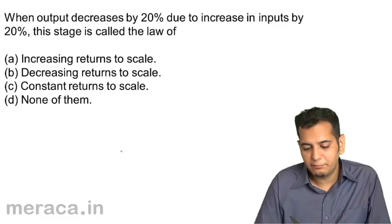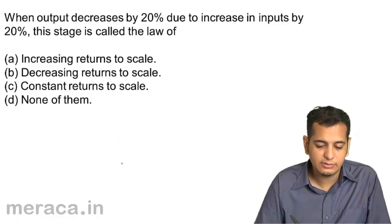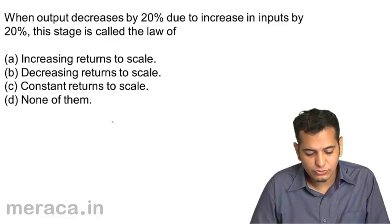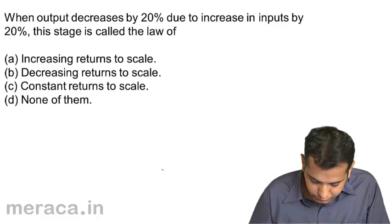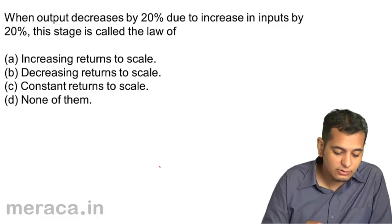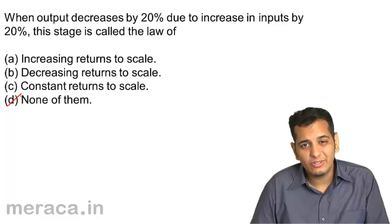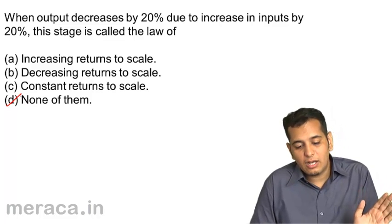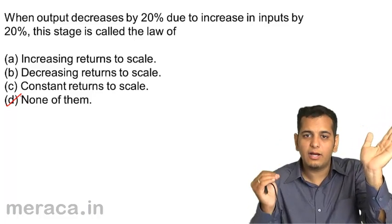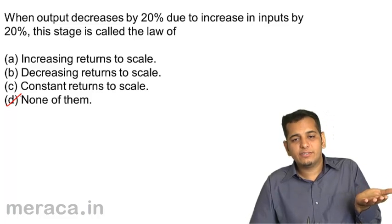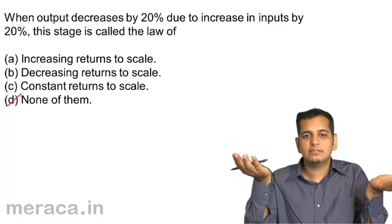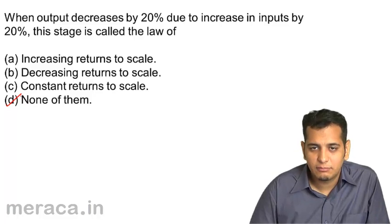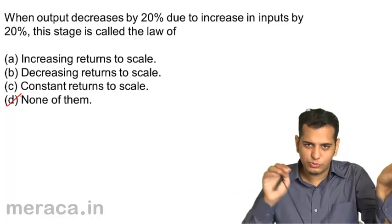When output decreases by 20 percent due to an increase in inputs by 20 percent, this stage is called: a) increasing returns to scale, b) decreasing returns to scale, c) constant returns to scale, d) none of them. The answer is none of them, because in no case we have studied does output actually decrease when inputs increase — the only difference in returns to scale is the proportion of increase, not a decrease in output.